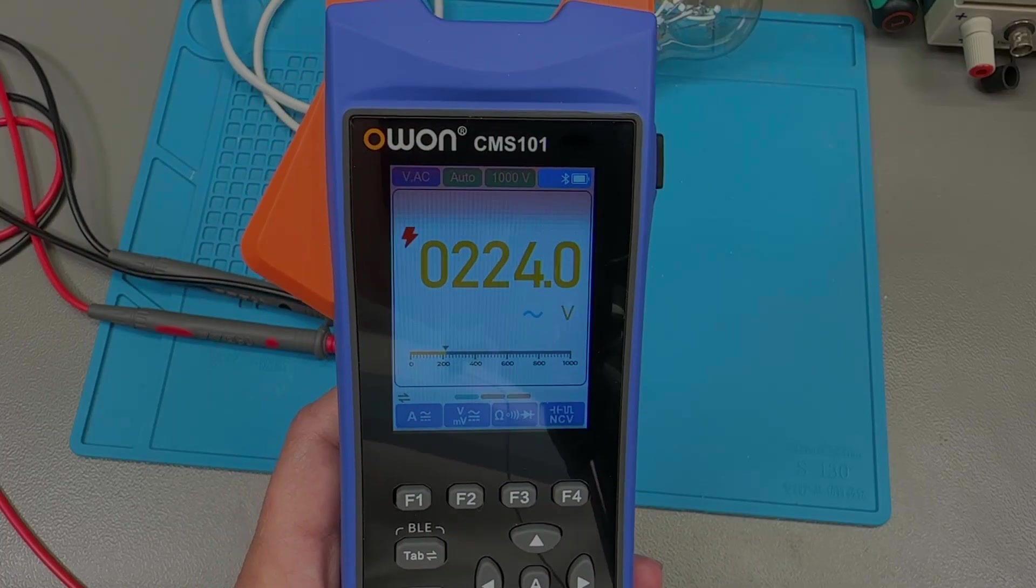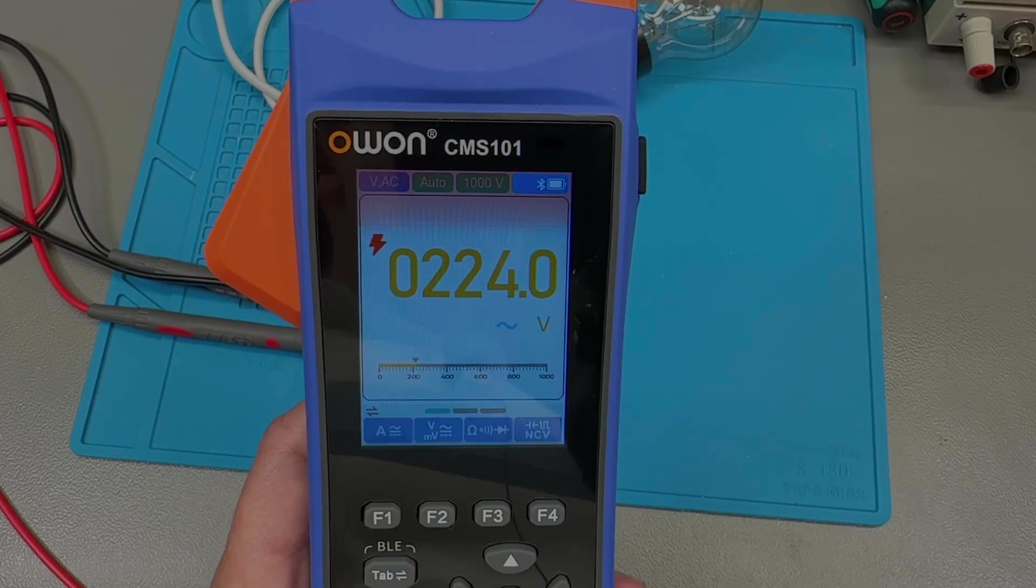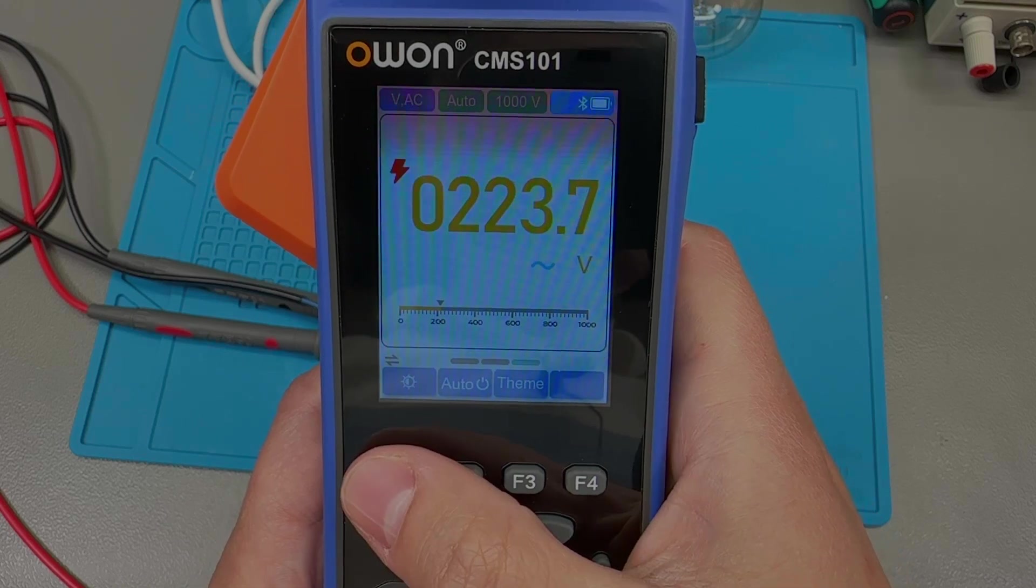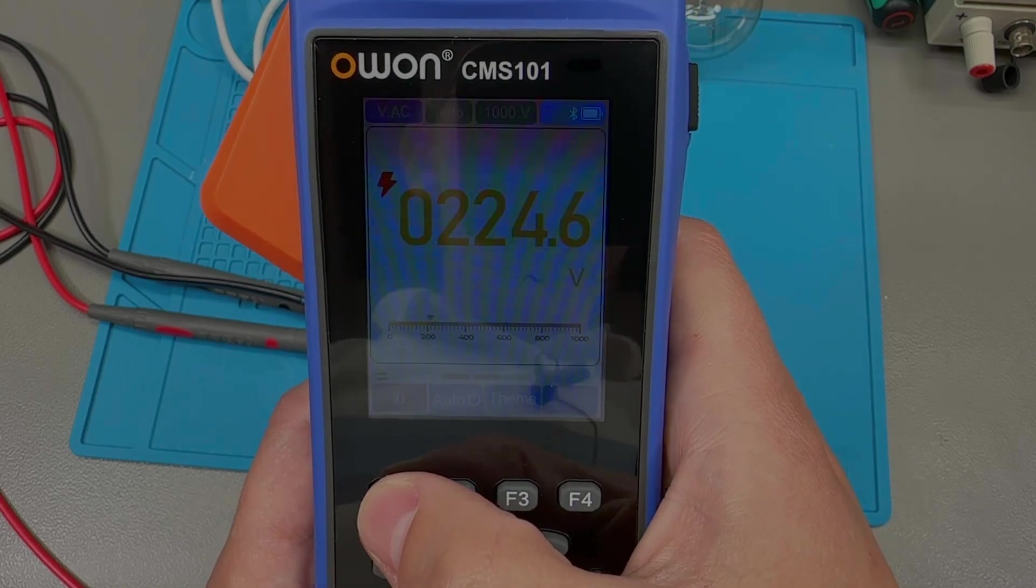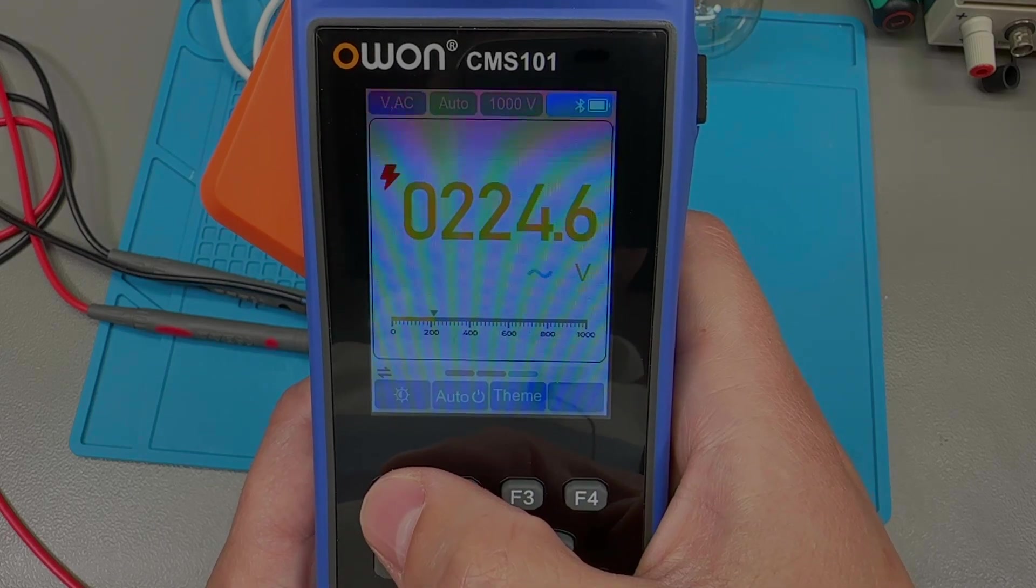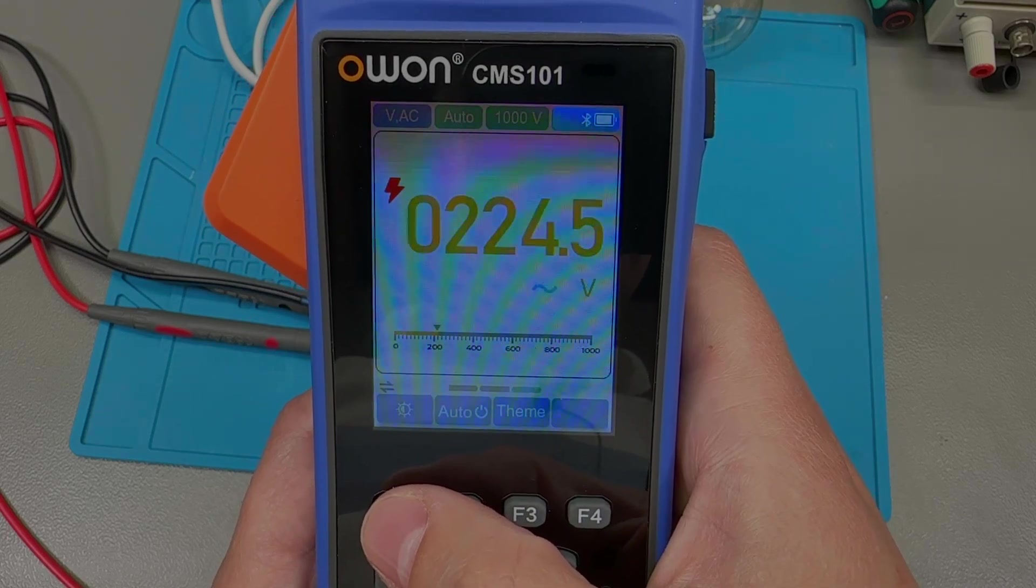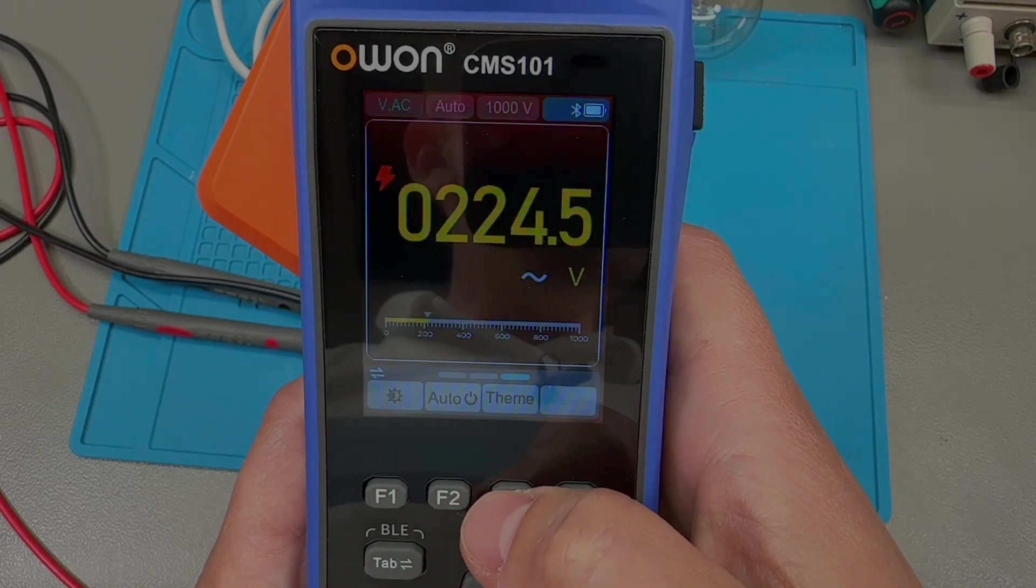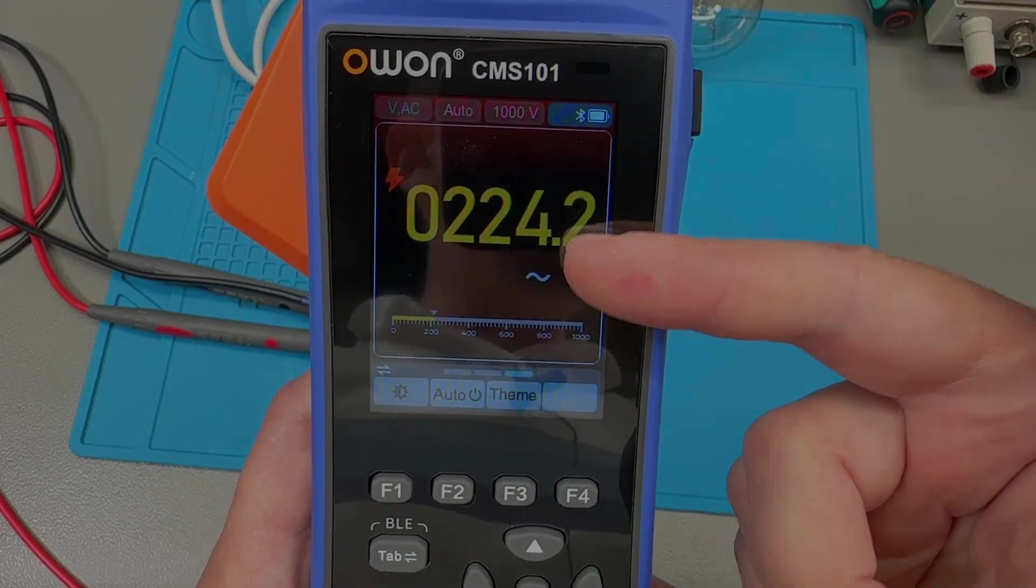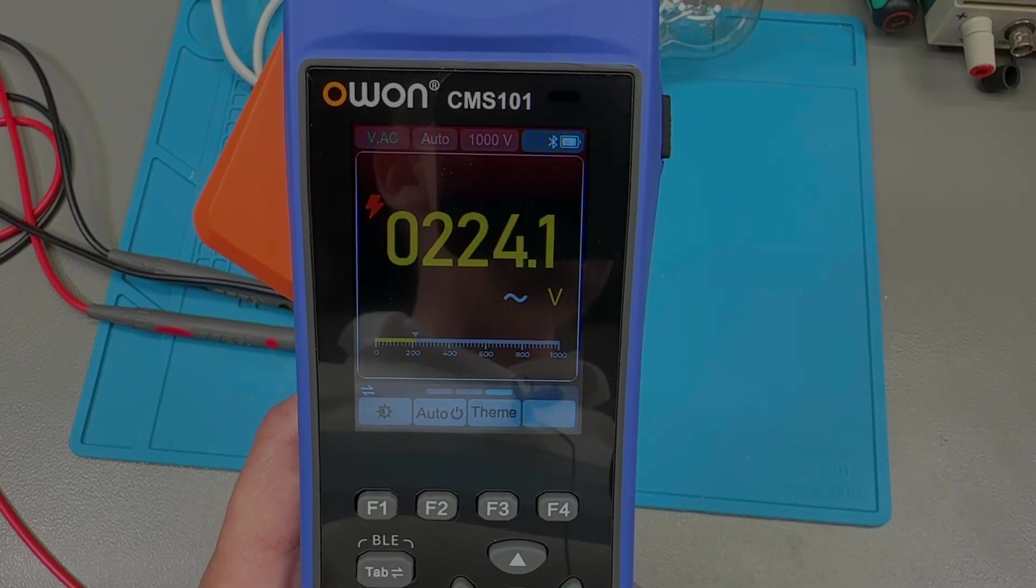There are also a couple of things that I really like because of their simplicity. For example, backlight brightness adjustments gives you three levels, which is nice and simple. And you can also choose between a light and a dark theme, which again is very nice. And I very much prefer a dark theme on my multimeters.